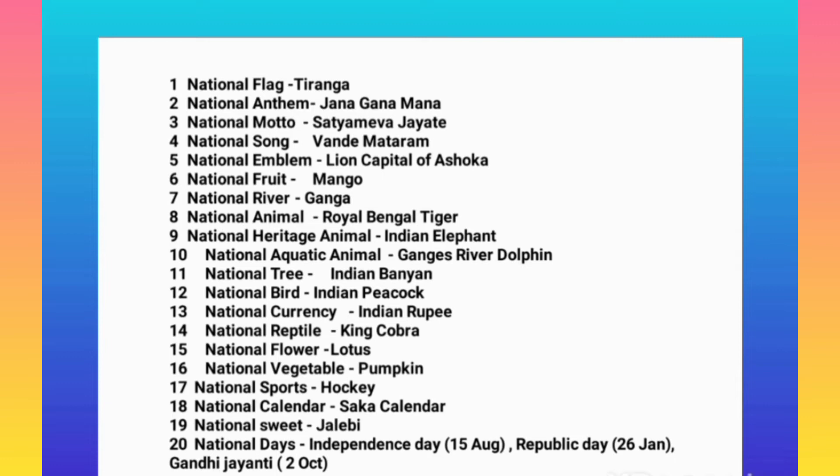National sport: Hockey. National calendar: Shaka Calendar. National sweet: Jalebi. National days: Independence Day celebrated on 15 August, Republic Day celebrated on 26 January, and Gandhi Jayanti celebrated on 2 October.